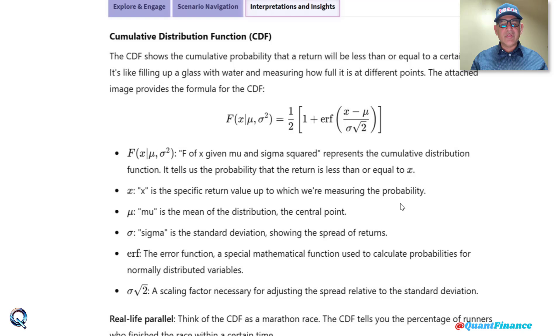Since we are doing CDF and PDF in context of stock returns, that is why x is a specific stock return value for us. And mu is definitely the mean of the distribution, the central point.